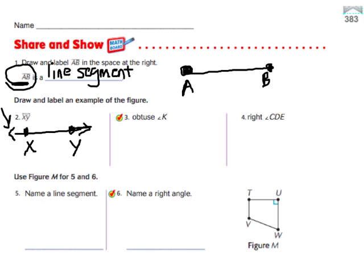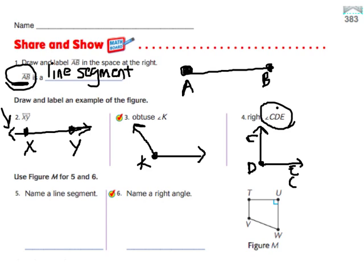Okay, obtuse angle K. Obtuse means it's a really fat one, but not quite straight, so we'll draw a really fat one. Angle K. K is at the vertex, so I've got to put a K here. I can draw arrows on the ends of each of those rays. Okay, number four, right angle CDE. Right angle, remember that goes straight up and straight across. We have our arrows on the ends. Now I need to put these letters in the right spot, C, D, E. Remember the important thing is the one in the middle is the vertex where they come together. So they come together right here at the vertex. I have to put D there. I can put C and E on either side. So I can put my C here and my E here. Or you could do it the other way, your C here and your E here. As long as that D is in the middle.